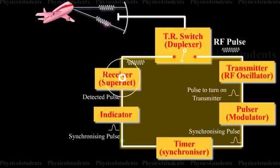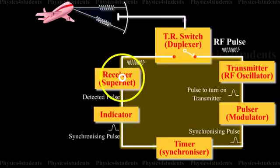This echo signal is amplified and demodulated by the superheterodyne receiver. The sensitivity of the receiver is very high.